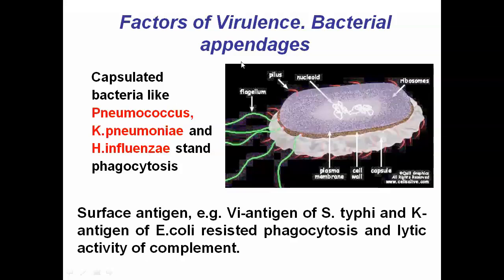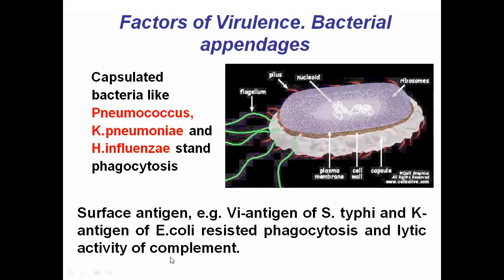Another virulence factor involves appendages, including capsulated bacteria. The presence of capsules — as in Pneumococci, Haemophilus influenzae, or Klebsiella pneumoniae — prevents phagocytosis. There are also some antigens such as the Vi antigen in Salmonella typhi and the K antigen of E. coli. Both of these resist or prevent phagocytosis as well as lysis by the complement system present in the blood or body.